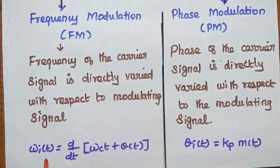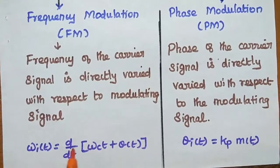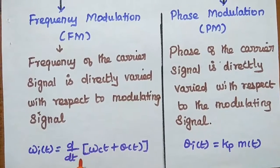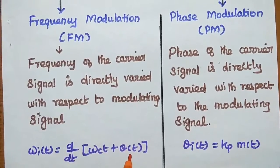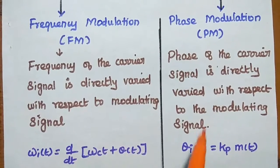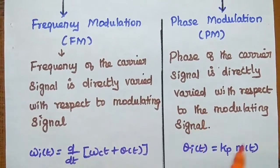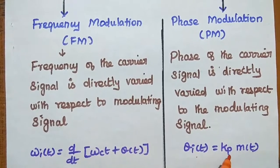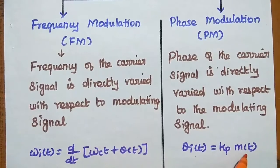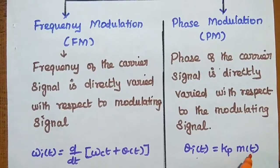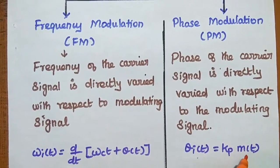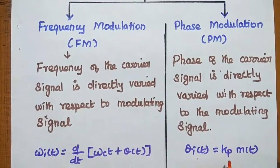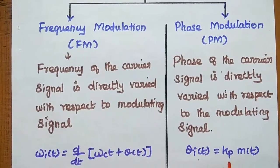The instantaneous frequency can be given as the differentiation of its phase value. The instantaneous phase of the PM signal is equal to Kp into M(t), where M(t) is the modulating signal and Kp is the phase deviation constant.